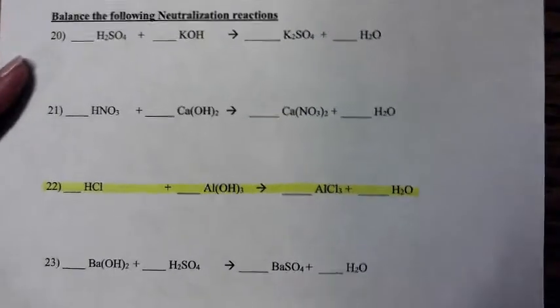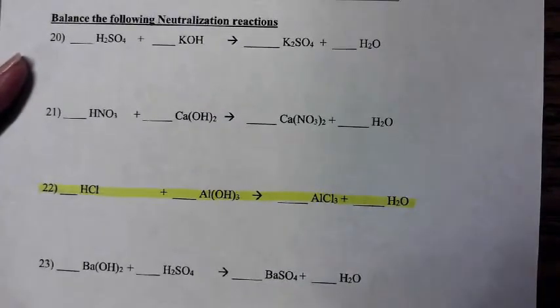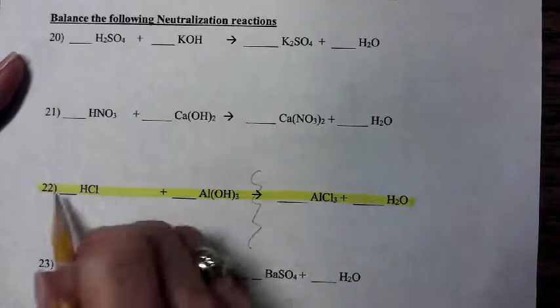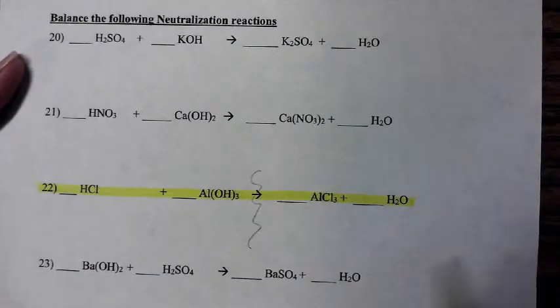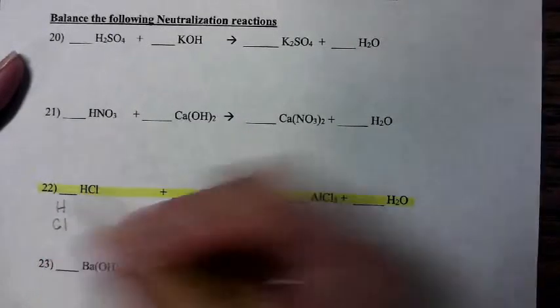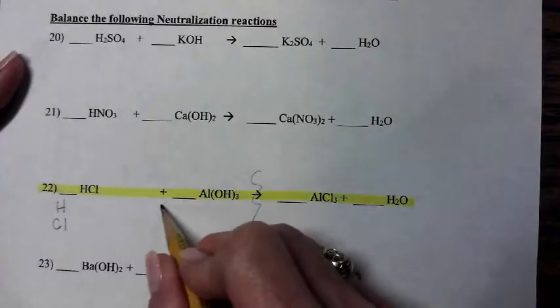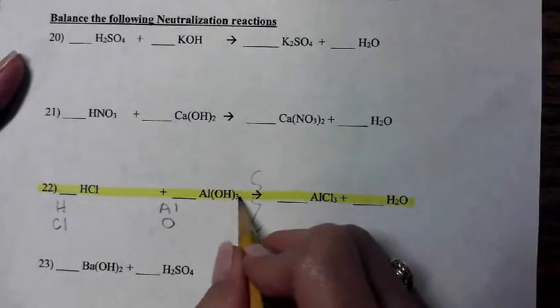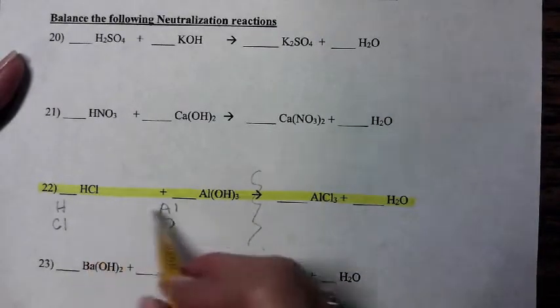So we're going to balance one of these neutralization reactions below. Balancing works the same for neutralization. Whatever I have on the left of the arrow, I have to have on the right of the arrow. So I list out my elements. Hydrogen, chlorine, aluminum, oxygen. Oh, look, more hydrogen.